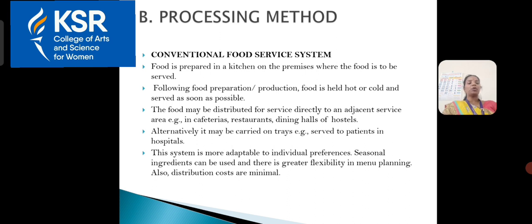The second classification is by processing method. The first type is the conventional food service system — food is prepared in a kitchen on the premises where it is to be served. Following food preparation and production, food is held hot or soft and served as soon as possible. It may be distributed directly to an adjacent service area such as cafeterias, restaurants, or dining halls of hostels, or alternatively carried on trays, for example food served in hospitals. This system is more adaptable to individual preferences, seasonal ingredients can be used, offering great flexibility in menu planning, and distribution costs are minimal.